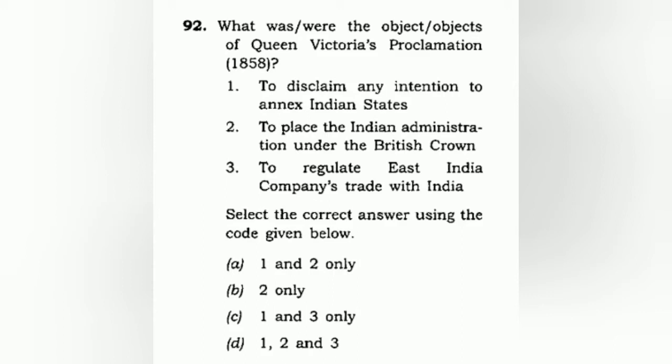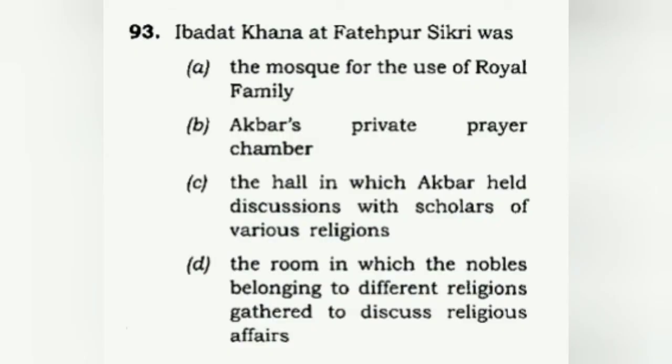What were the objects of Queen Victoria's Proclamation of 1858? Option one — disclaimer of intention to annex Indian states — is correct. Option two — placing Indian administration under the British Crown — is correct. Option three — regulating East India Company's trade with India — is incorrect because that was done by the Court of Directors and the Board of Control through earlier acts like the Regulating Act and Pitt's India Act. The correct answer is A: one and two only.